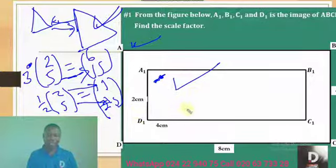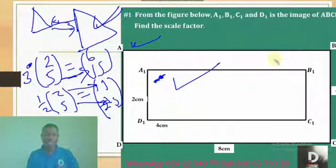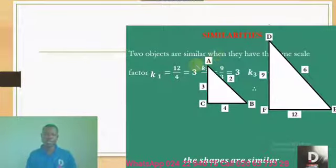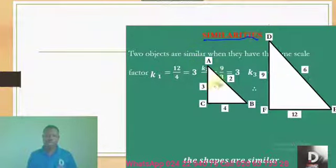So now, let's see the next thing to do. Let's see if we can answer some exam questions. You see how the examiners frame the question. But before that, let's look at similarities. Similarities. At what point do we say two or more objects are similar in mathematics? They are similar.